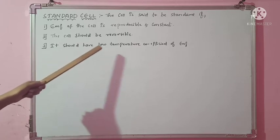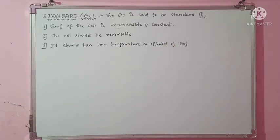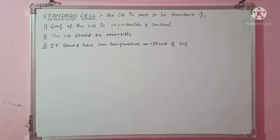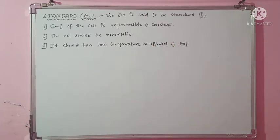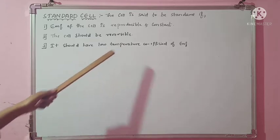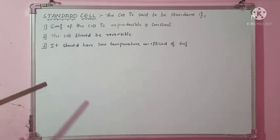Next, it should have a low temperature coefficient of EMF. This is very important. What this means is: if we vary the temperature, the EMF should not vary significantly. Even if it is changing, the EMF change with respect to temperature should be very negligible or very small. So if the cell satisfies all three of these conditions, it is said to be a standard cell.